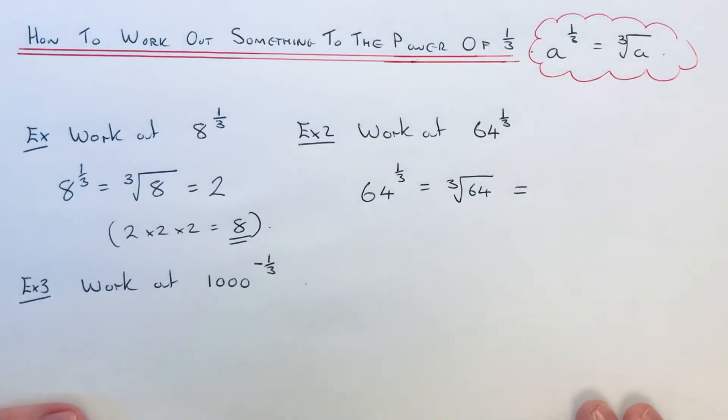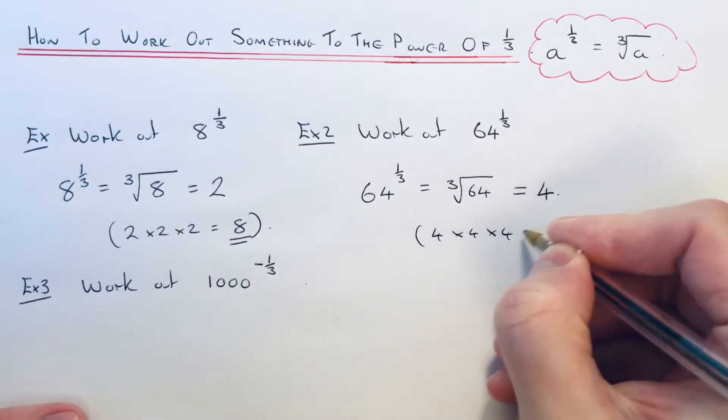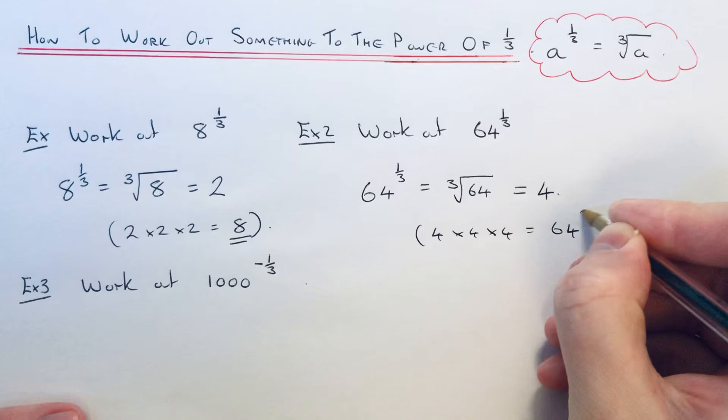So the cube root of 64 is 4, because 4 times 4 times 4 equals 64.